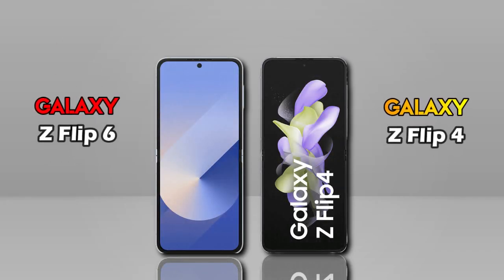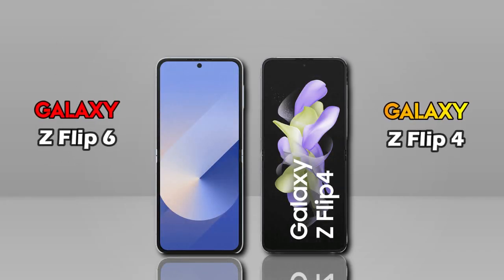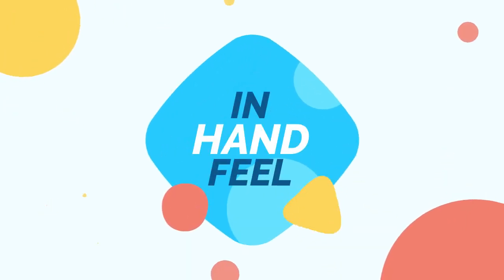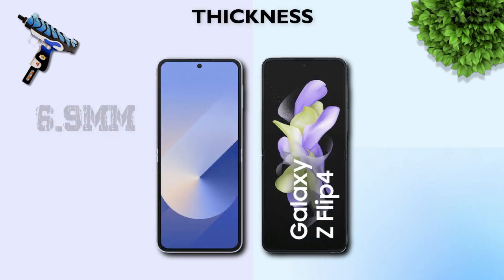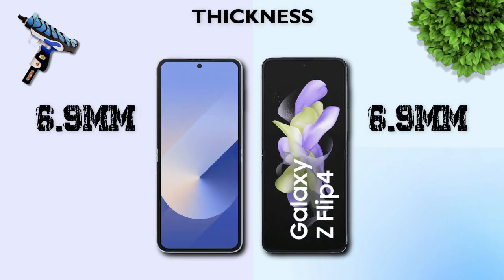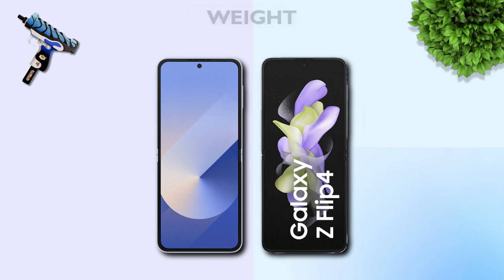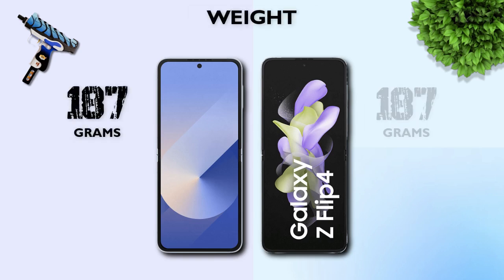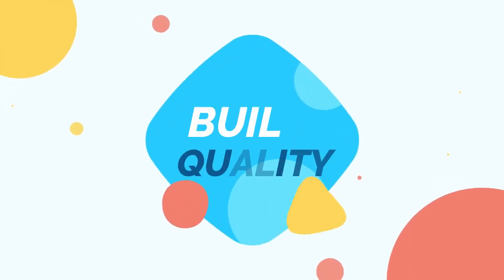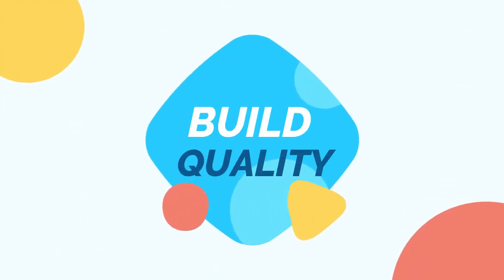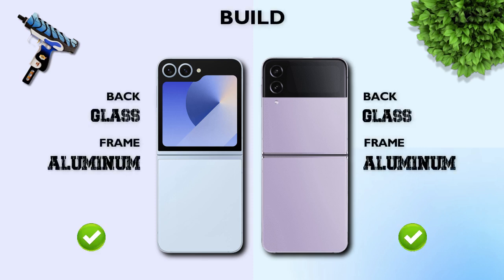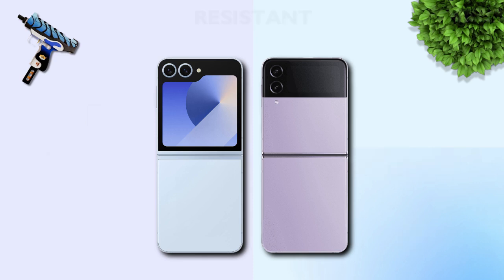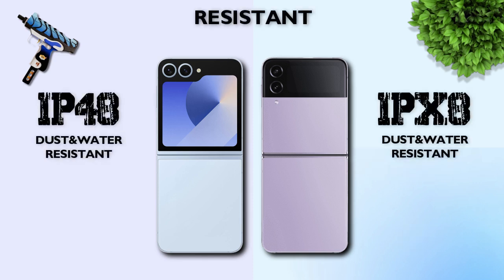Now we are comparing the Samsung Galaxy Z Flip 6 and Galaxy Z Flip 4 — which one is better in-hand? Thickness 6.9mm, same. Weight 187g, same. Build quality: glass back and aluminium frame, same. Water resistance: IP48, the Galaxy Z Flip 6 is better.